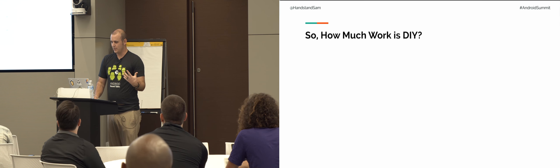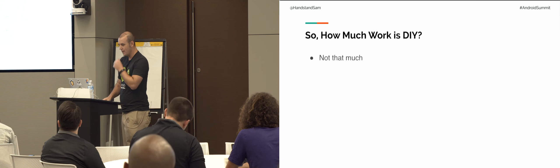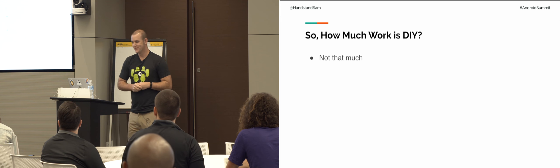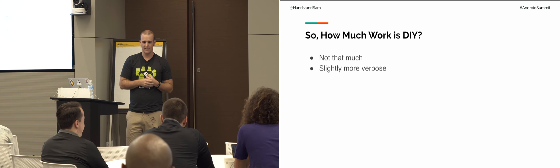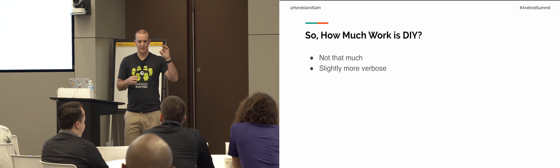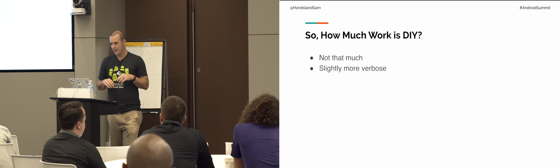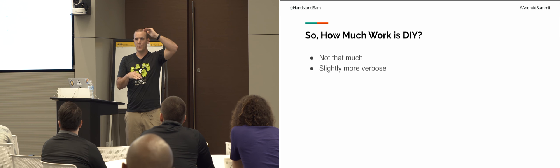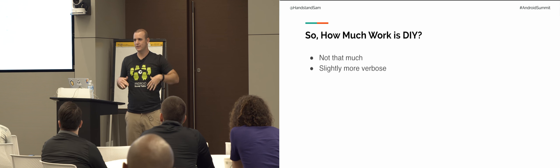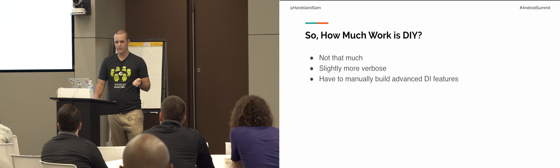So how much work is it to do it yourself? It's a little bit slightly more verbose than if you use Dagger or something like that. But I challenge that a little bit, because with Dagger you have to have all these @inject annotations and @component annotations all over the place. In this case, you're writing named parameters — you could have a graph that has like 20 things on it, but with named parameters and default parameters it's actually pretty readable.